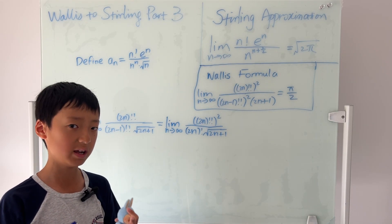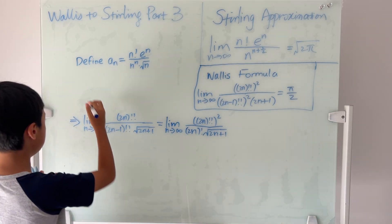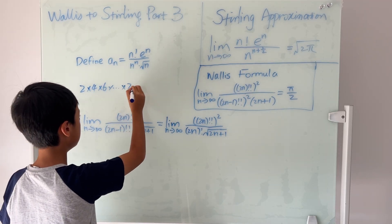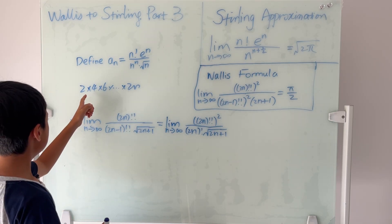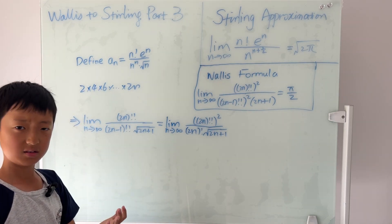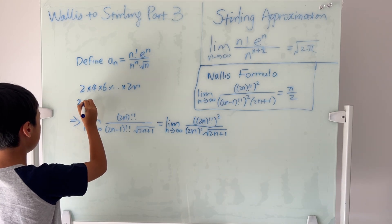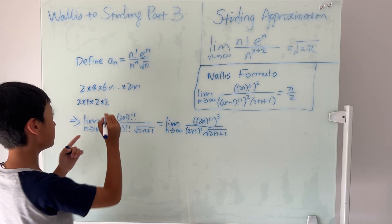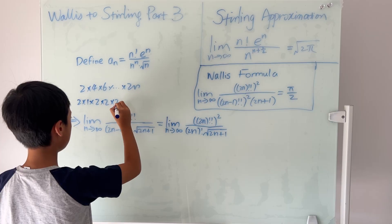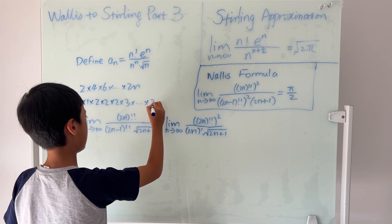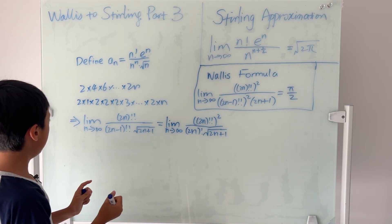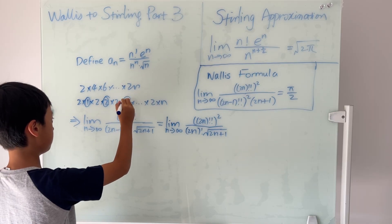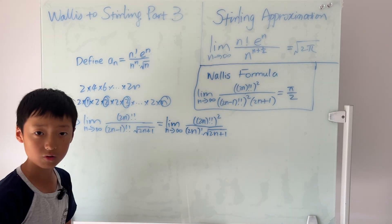Let's try to change 2n double factorial into a normal factorial — this is a really important skill. An even-term double factorial equals 2 × 4 × 6 × ... × 2n. Now, 2 = 2×1, 4 = 2×2, 6 = 2×3, all the way to 2×n. We can factor out all those 2's — there are n of them — giving us 2 to the power of n times (1 × 2 × 3 × ... × n), which is n factorial. So 2n double factorial equals 2^n times n factorial.